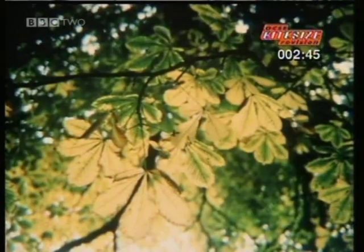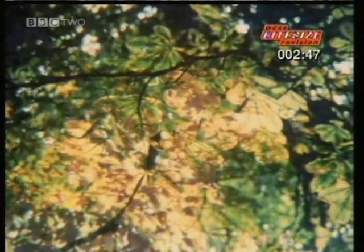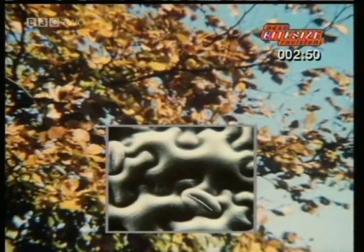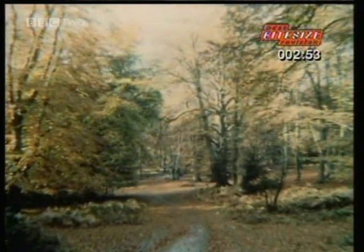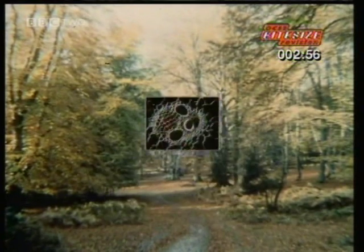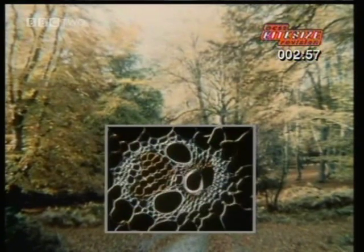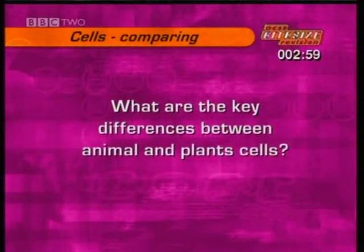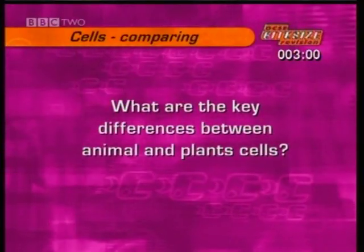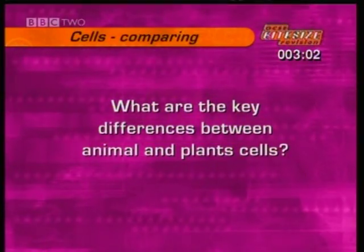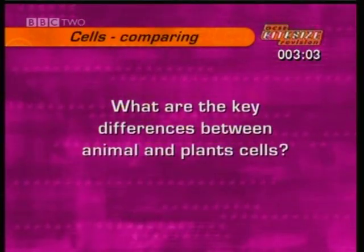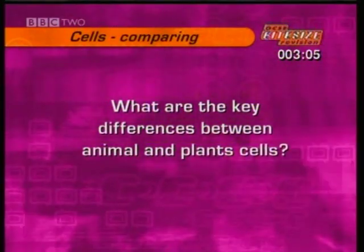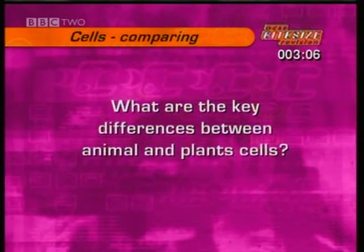Plants, too, are made up of many different types of cells. For instance, there are the guard cells around the stoma in a leaf, the cells at the tips of growing roots, and the cells in the stalk. But what are the key differences between animal and plant cells?